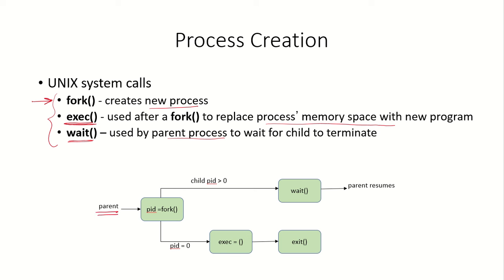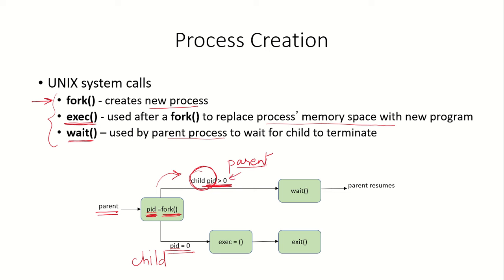The parent process calls the fork system call, which returns the process ID — different for the child and the parent. If the PID is greater than 0, that means this is the parent process. If the PID is 0, that means this is the child process. To the parent, the child's PID is returned because fork is creating a child. To the child, a return value of 0 is returned.